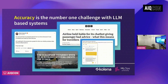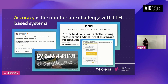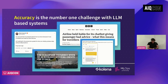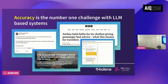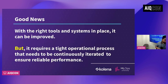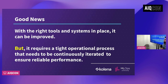The number one challenge for enterprises today with respect to adopting AI-based applications is accuracy. As you can see from all these different headlines from different sources, this is the number one reason why enterprises are skeptical to adopt AI, even though most of them see a clear business use case. The good news is with the right set of tools and the right set of processes, you can iterate your way to good accuracy and a reliable system.